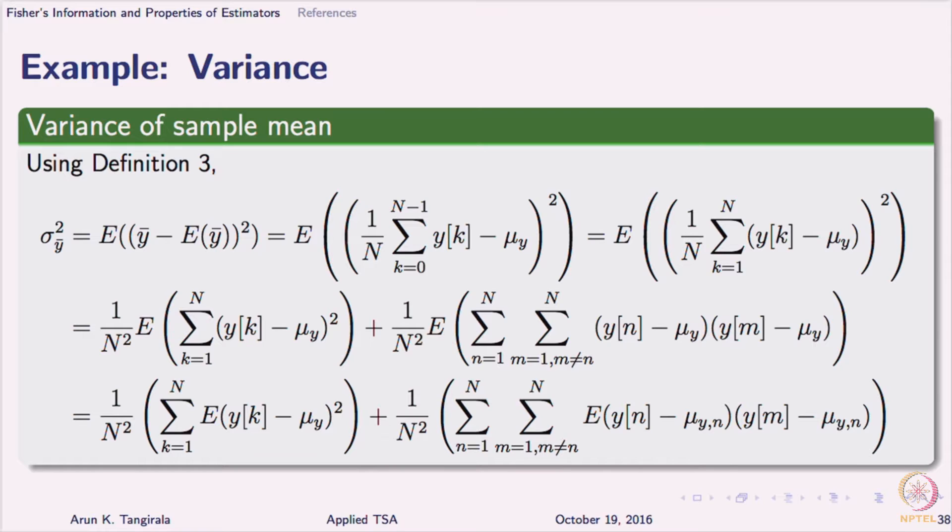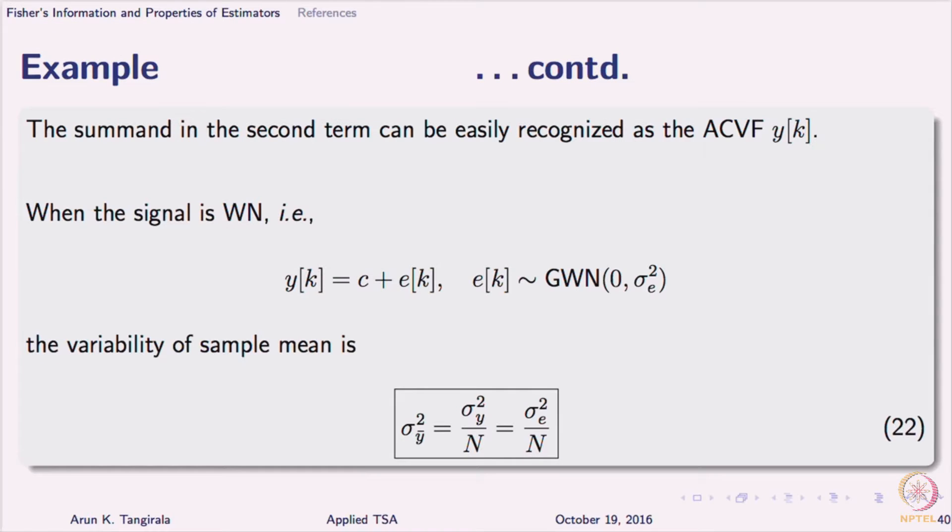Otherwise, the variance depends on the auto covariance structure. So, for a white noise process, what is the variance? σ²/n. That is the standard expression that you see in all statistics textbooks that the variability in the sample mean for a random sample.